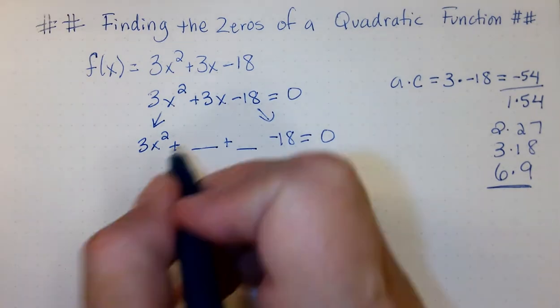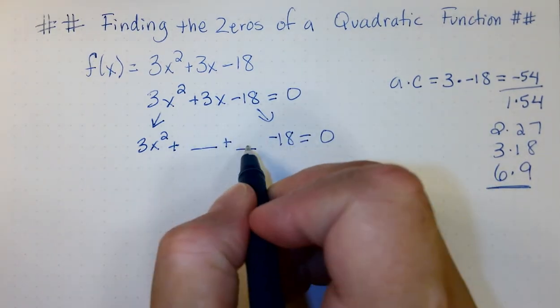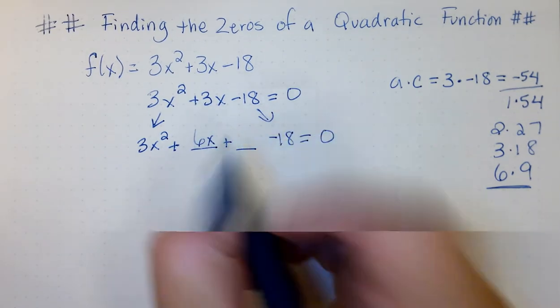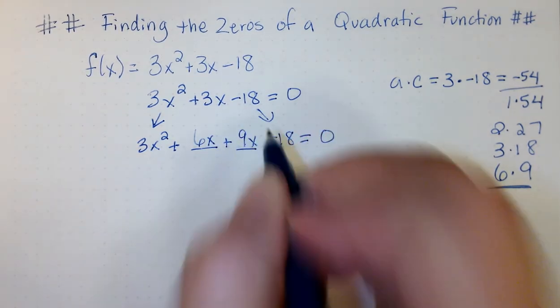So, let's go ahead and put these numbers in the blank. And remember, we're wanting these two middle terms to add to 3x, so we do need to put an x there with it. We have 6x in the first blank and 9x in the second blank.